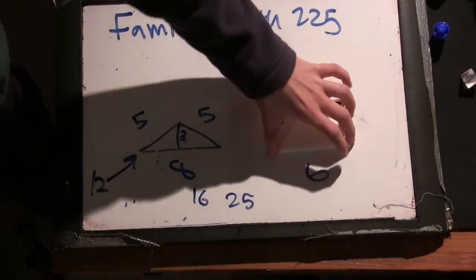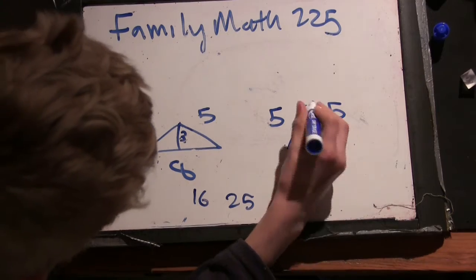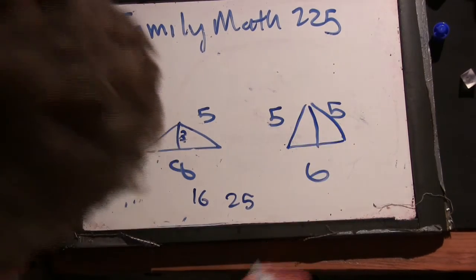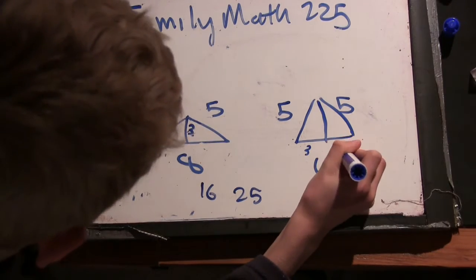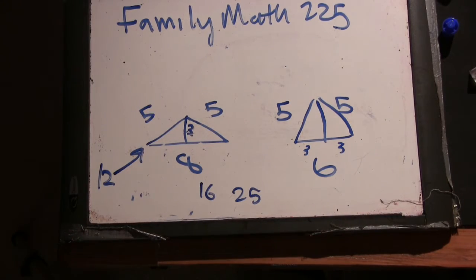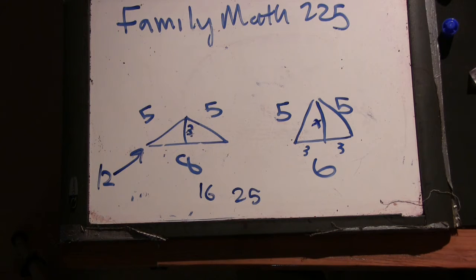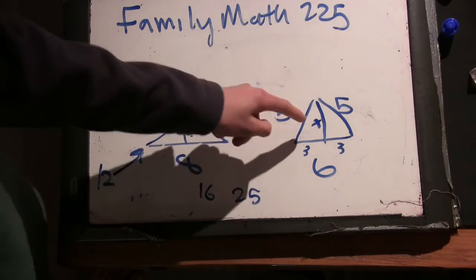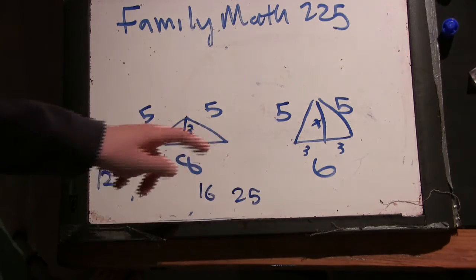Now, we can do the same thing for this triangle here. So, we can cut it in half. So, we have these segments, and this side is x, but it looks like here it's the same 3, 4, 5 triangle again, because 9 plus 16 will equal 25.